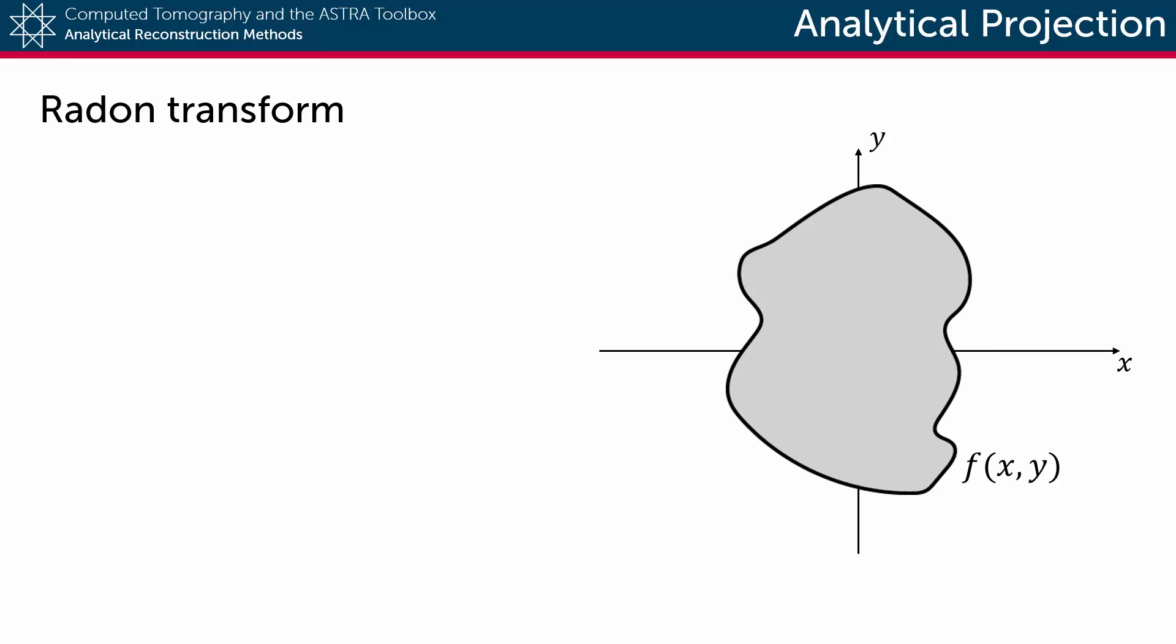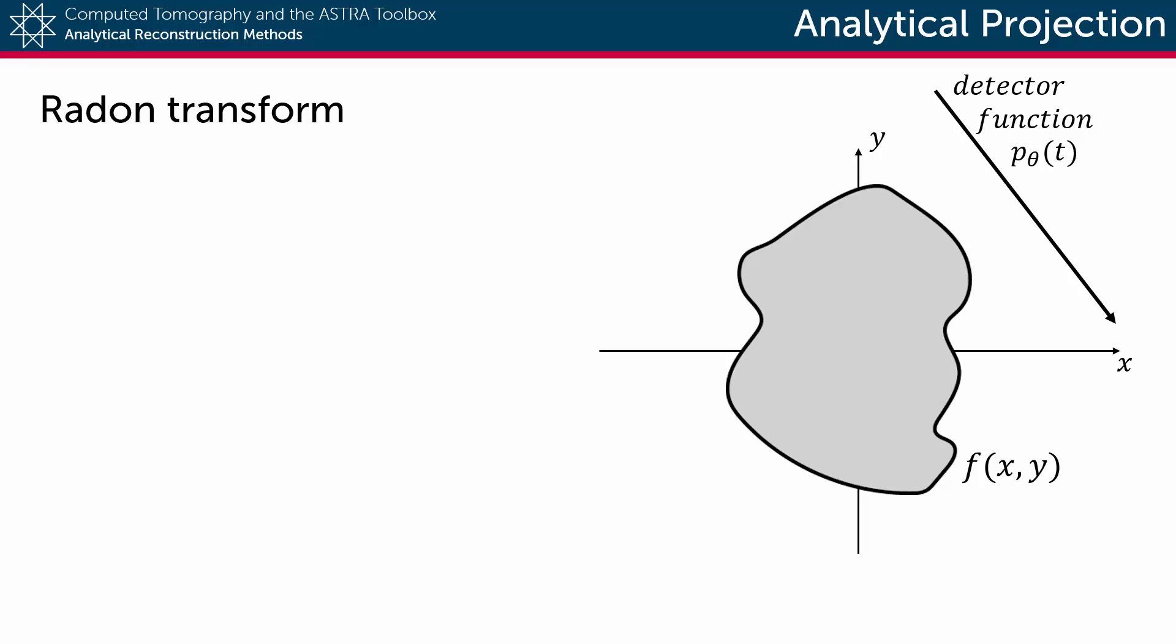Let's consider a certain two-dimensional object defined by the function f on a Cartesian coordinate system. Then define a line in this system that holds the detector array for a certain projection direction θ, and on this line we measure what is called the detector function p.